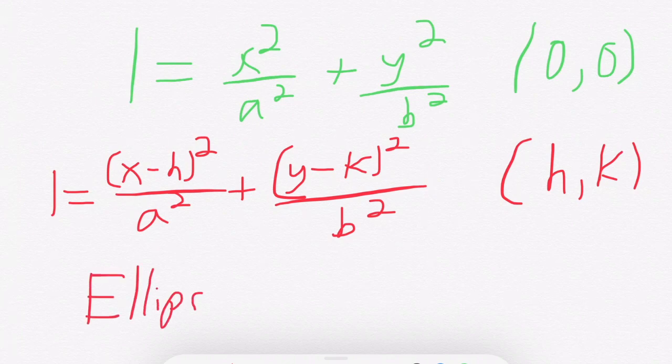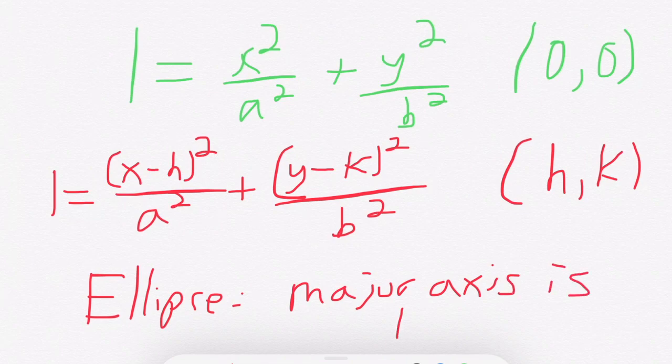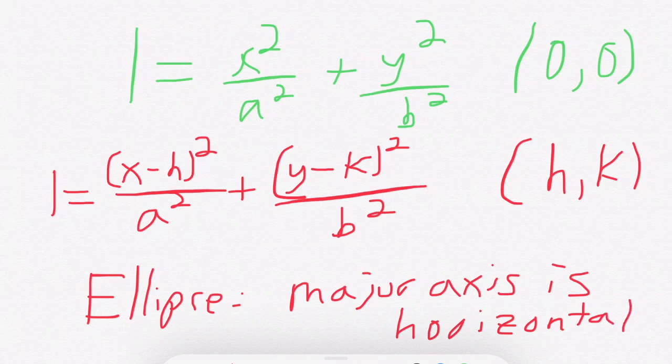Now remember, it only works if the major axis is horizontal. That's how we had oriented our diagram before. If it's not horizontal, we need to put the a with the y term, because a needs to be our largest variable.